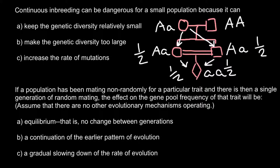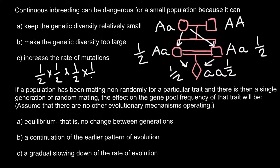On the maternal pathway for this individual we have one-half chances and one-half — so one half multiplied by one half. On the paternal side, we also have one-half chances that this parent gets the recessive allele, and one-half that he transfers it to the progeny. So the probability that this individual would receive the recessive allele from both sides is one over sixteen — one chance out of sixteen.